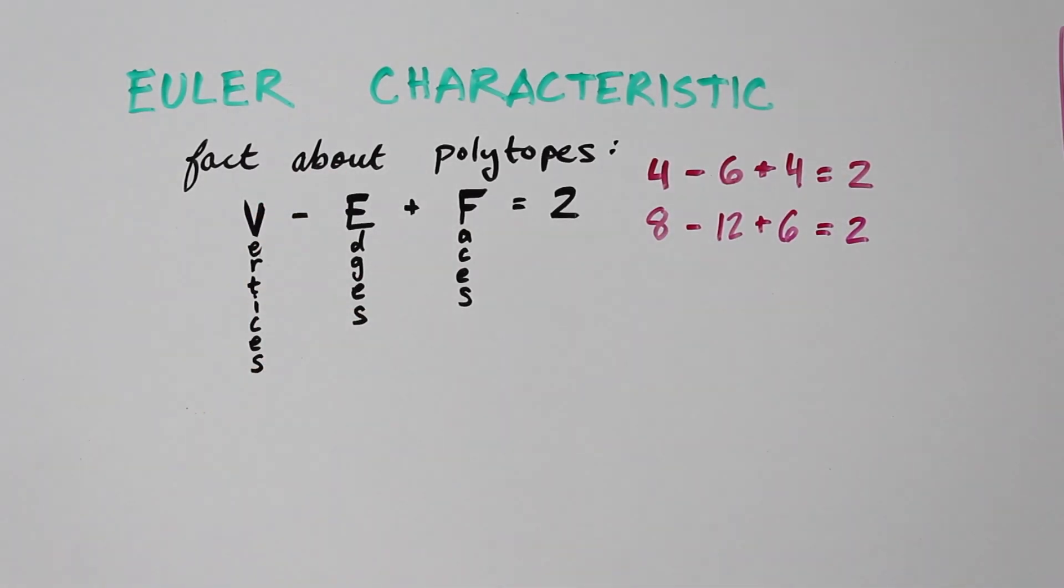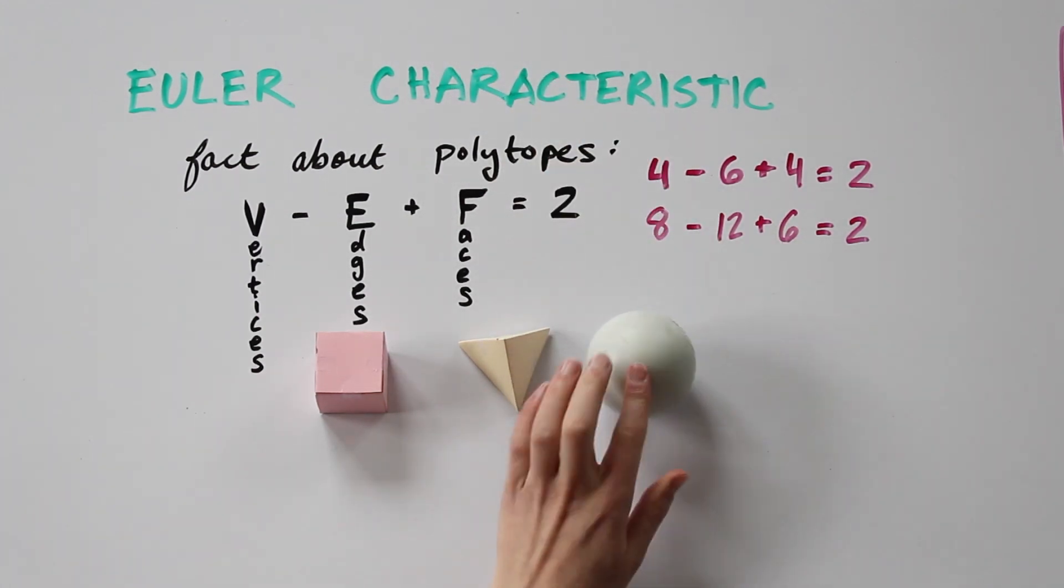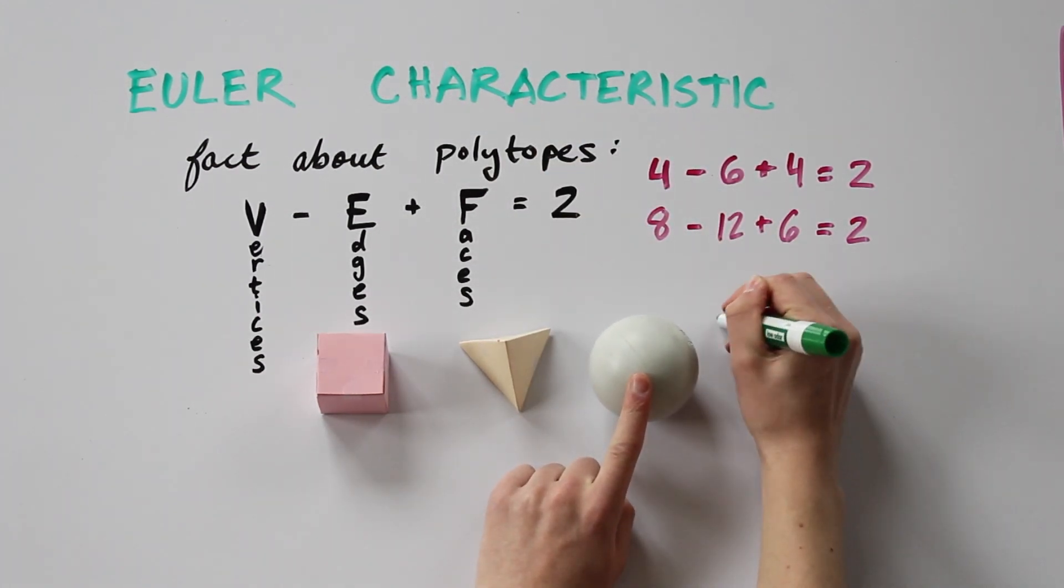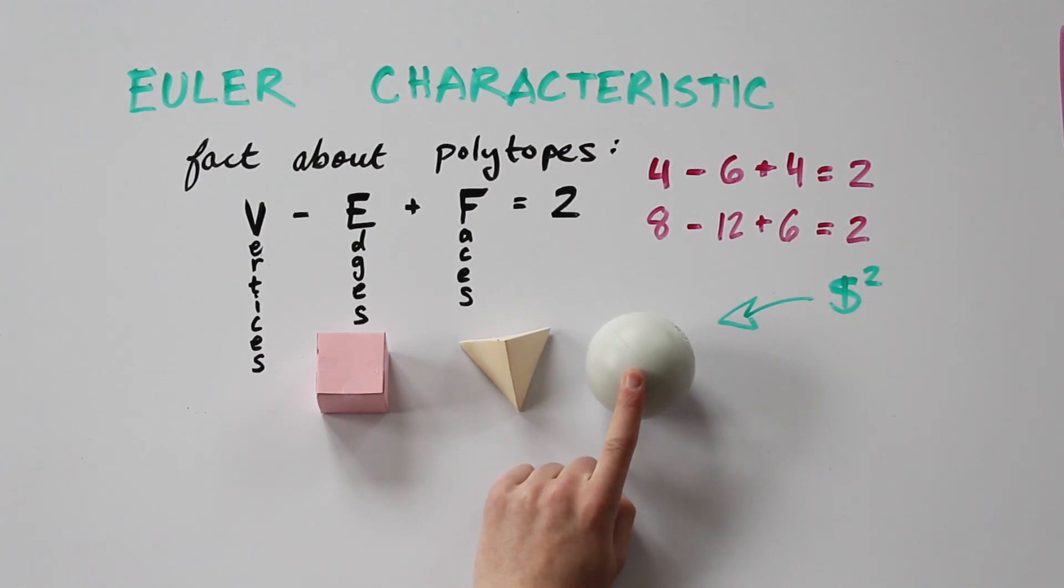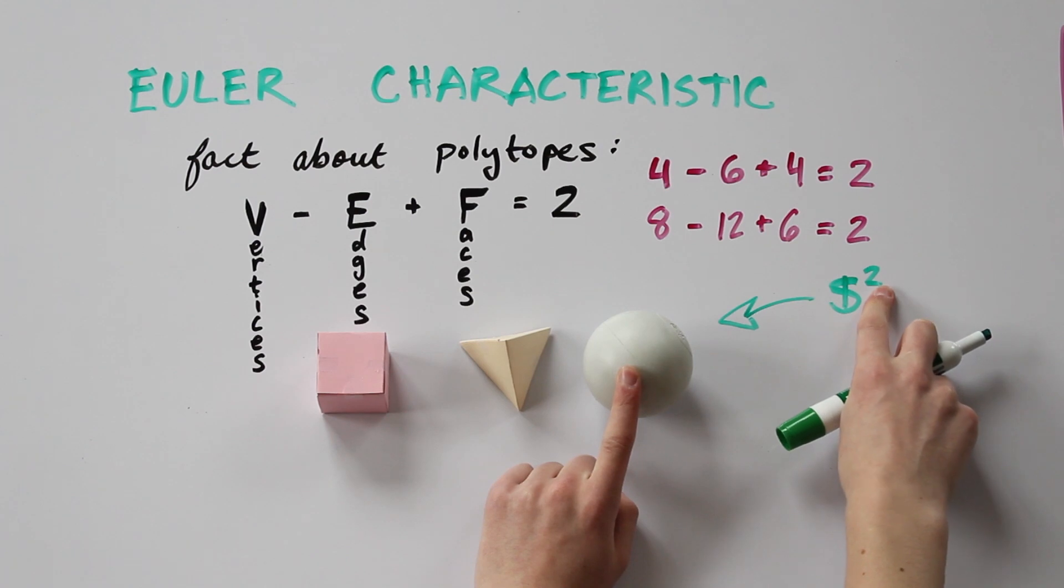This fact is true for all three-dimensional polytopes, not just the regular platonic solids like the cube and the tetrahedron. And all three-dimensional polytopes are homeomorphic to the sphere. We're going to denote the sphere as S2 for a two-dimensional sphere.